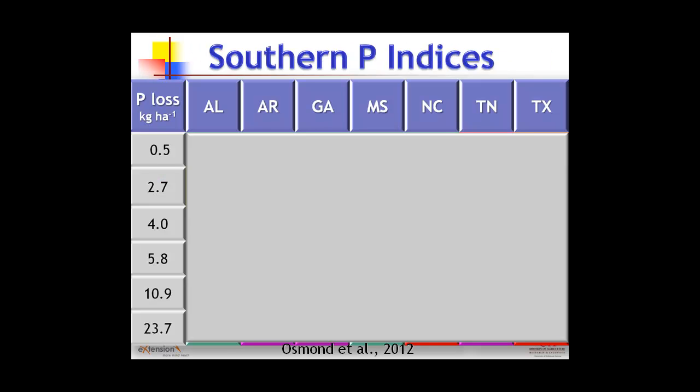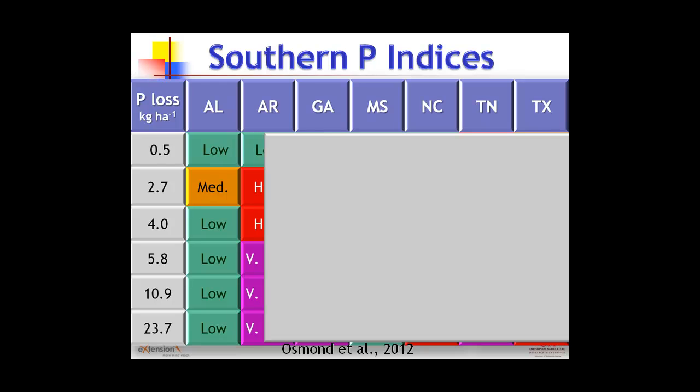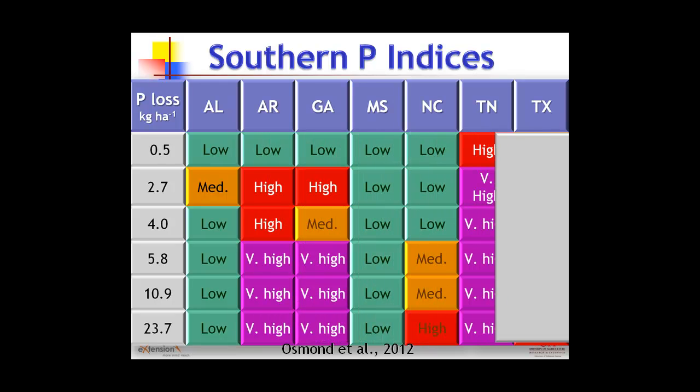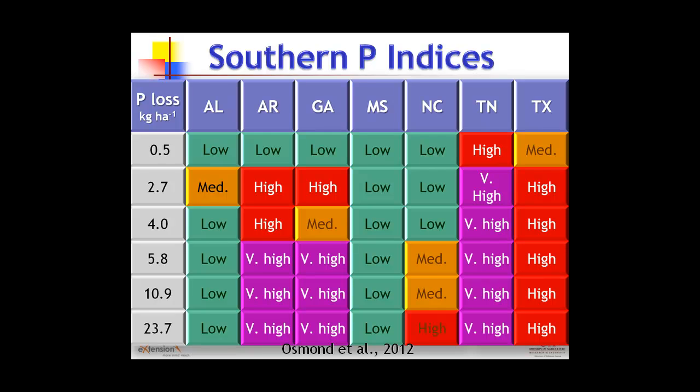As researchers, we tended to develop it, think we've done a good job, and leave it alone. But Deanna Osmond did a study in 2006 and repeated it in 2012 comparing U.S. state indices. What she did was use each index from different states under the same conditions - and while those same conditions vary from state to state, it shows there's a lot of variability across state lines.